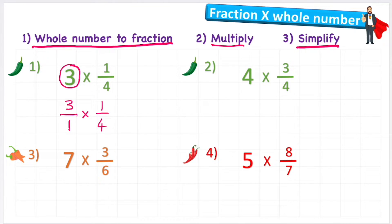Now we're going to follow step 2, multiply. All we're going to do is multiply our numerators, the top number. So 3 multiplied by 1 is 3 and then multiply my denominator, my bottom number, and 1 multiplied by 4 is 4. And it kind of makes sense doesn't it with this first example because 3 multiplied by 1 quarter, so 3 times 1 quarter will end up with 3 quarters.